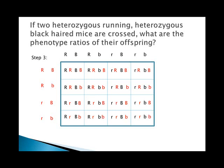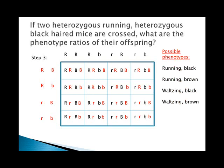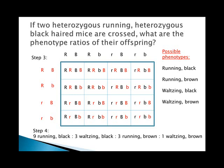I'm only asking for phenotype ratios here. The possible phenotypes are: running black, running brown, waltzing black, and waltzing brown. Counting them up: nine running black, three running brown, three waltzing black, and one waltzing brown. In a true dihybrid cross — heterozygous for both traits — you always see this 9:3:3:1 ratio: nine dominant-dominant, three dominant-recessive, three recessive-dominant, one recessive-recessive, totaling 16.